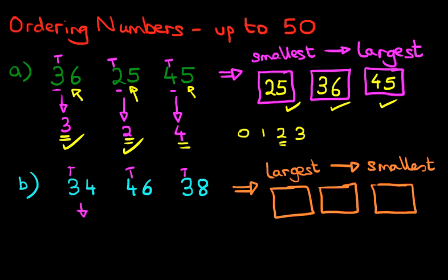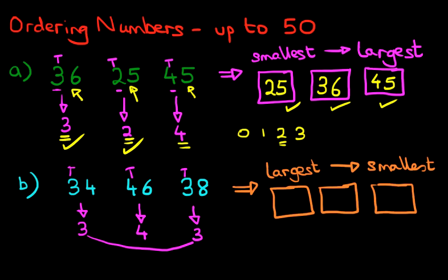How many tens are there in the first number? There are three tens. How many in the second number? There are four tens. How many in the last number? There are three. Now notice: two of the tens are the same — the three and the three — while four is different and on its own. Of the digits three and four, which is larger? It is four. So the 46 has four tens, making it larger than both other numbers — 46 is the largest number. We can write that one in straight away.